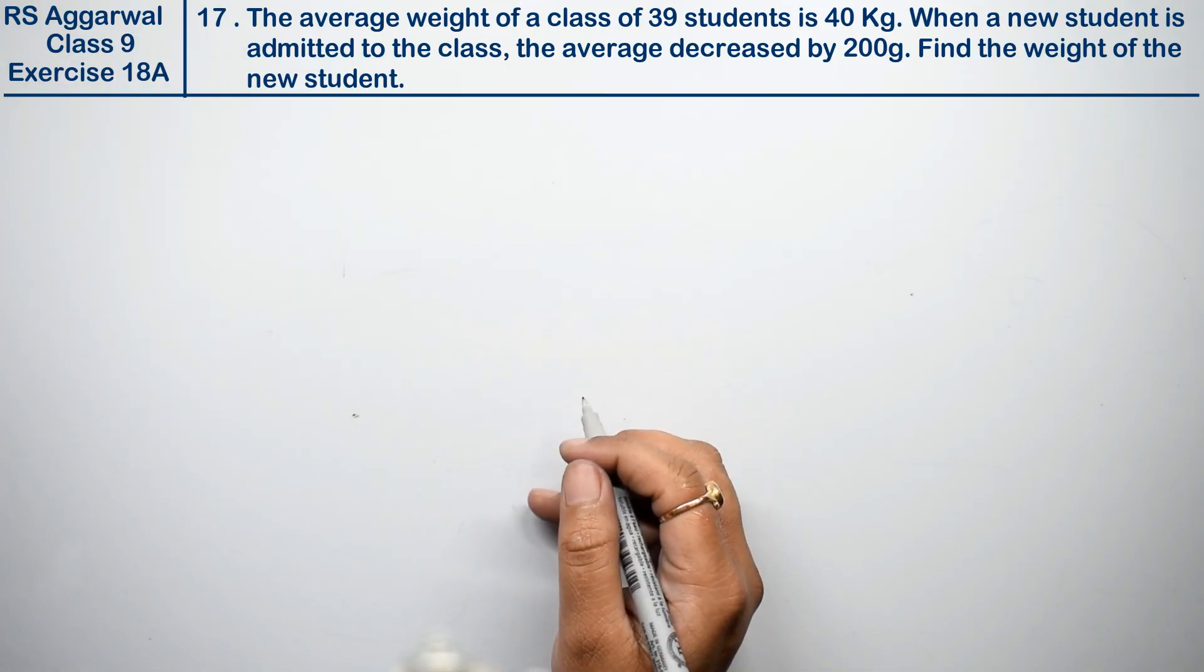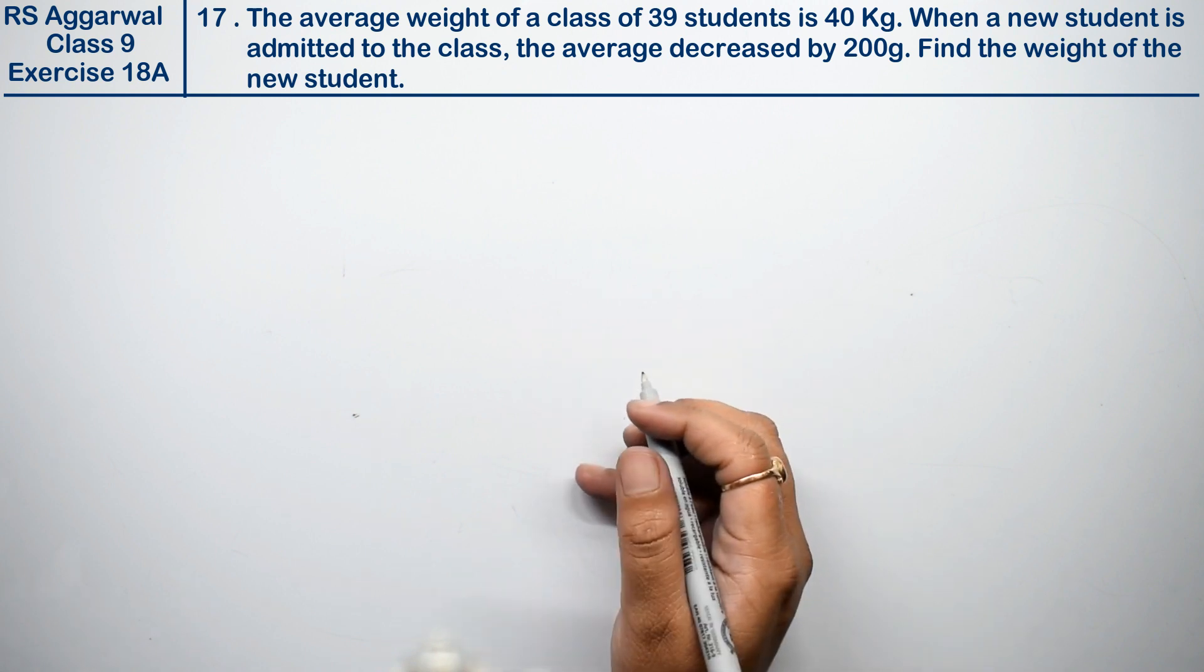Let's do question number 17 of exercise 18A, that is mean, median and mode of ungrouped data.